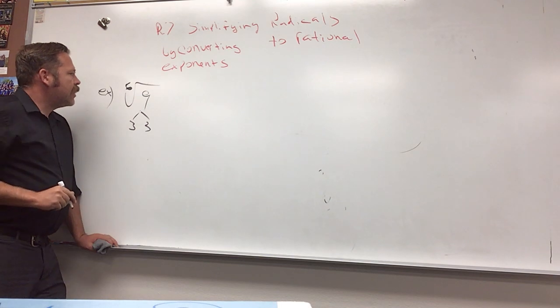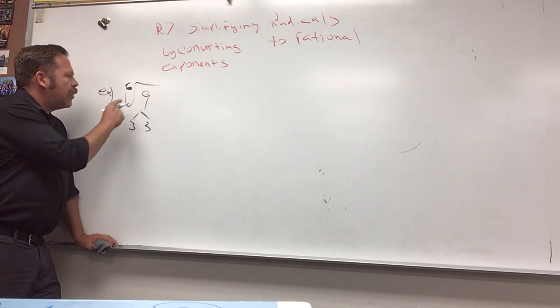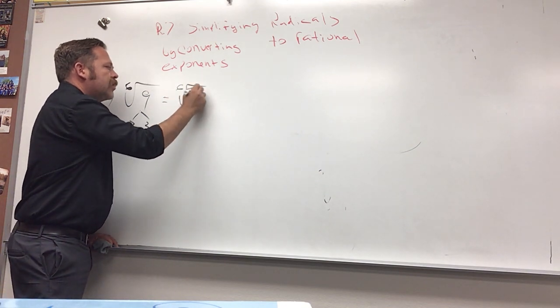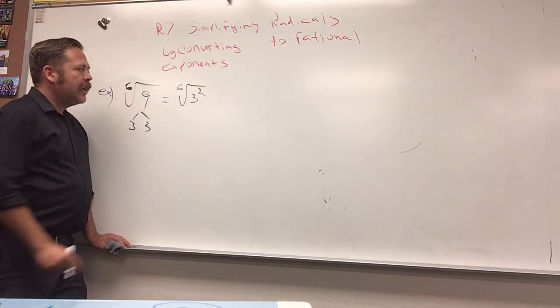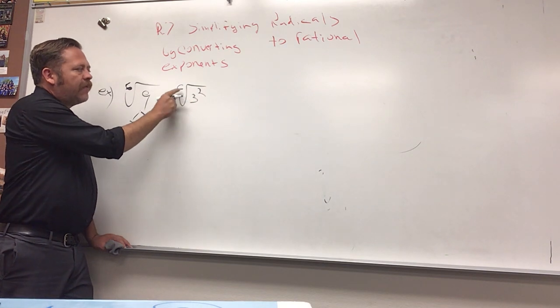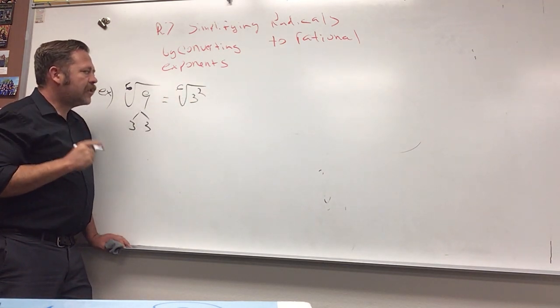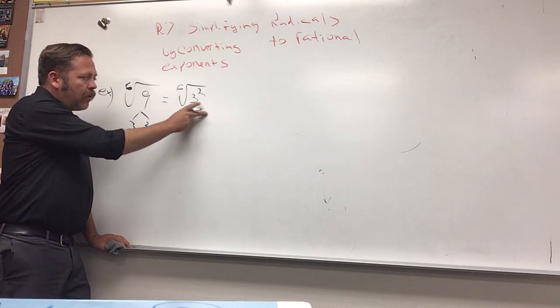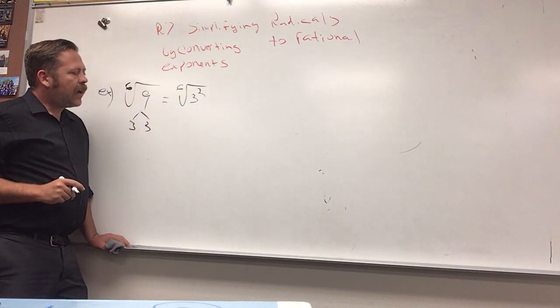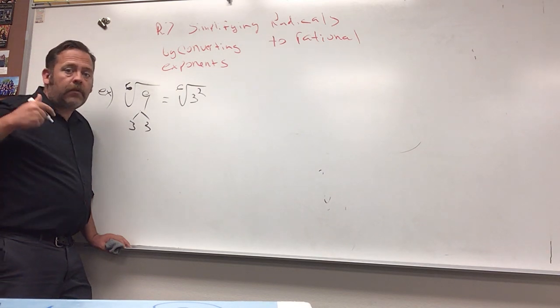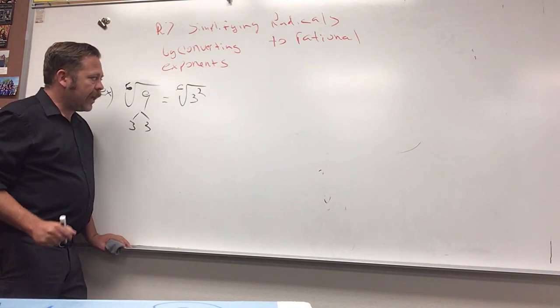But the thing is, if you wrote this as six times three squared, which is the exact same thing, then this exponent has a common factor with this root number. So, if they share a common factor, it's not simplified. And you can't pull out a three, but you can simplify it and write it as a smaller root number by converting it to a rational or fractional exponent.